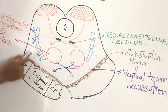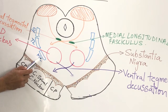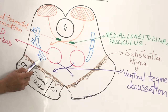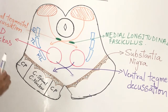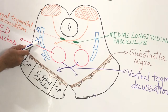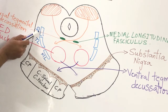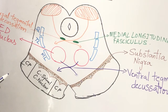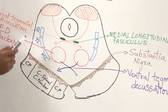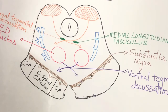The medial lemniscus is the upward continuation of fasciculus gracilis and fasciculus cuneatus, carrying tactile discrimination, tactile localization, stereognosis, and conscious proprioceptive information along with fine touch. The trigeminal lemniscus carries pain and temperature from the opposite side of the face. The spinal lemniscus is the upward continuation of the lateral spinothalamic tract — injury to the spinal lemniscus causes loss of pain and temperature from the opposite side of the body.